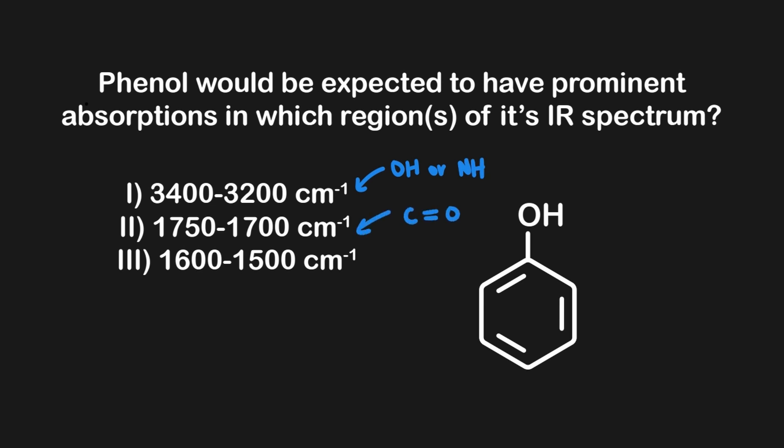while 1750 to 1700 refers to the C double bonded to an O, and lastly, 1600 to 1500 refers to aromatic carbon bonds. Since phenol has an OH group attached to an aromatic ring, we would expect the correct answer to contain both answers 1 and 3, since those correspond to those particular functional groups.